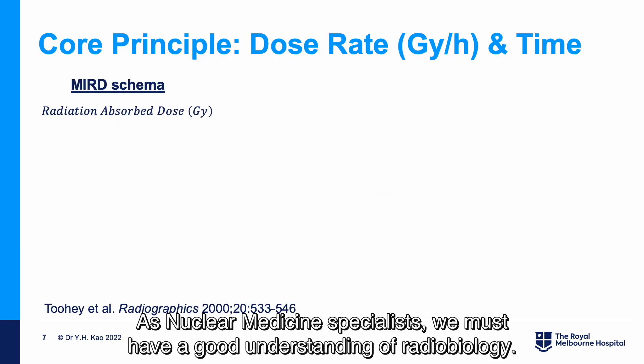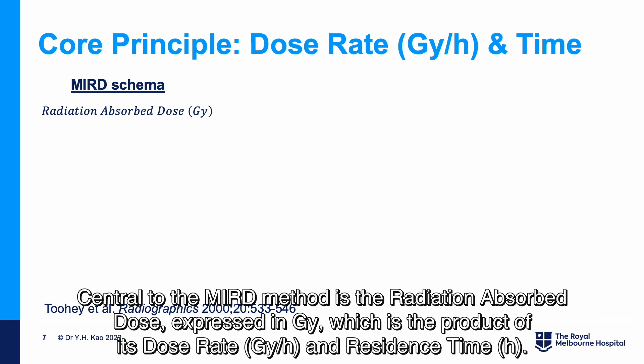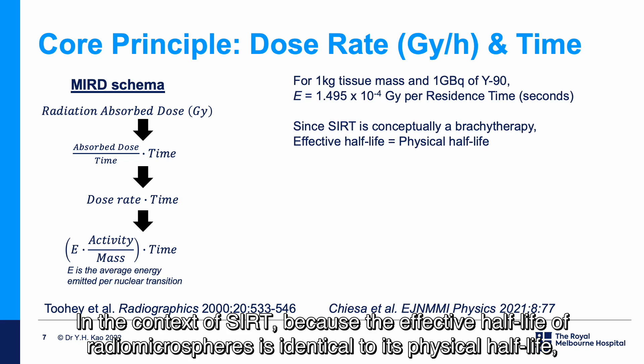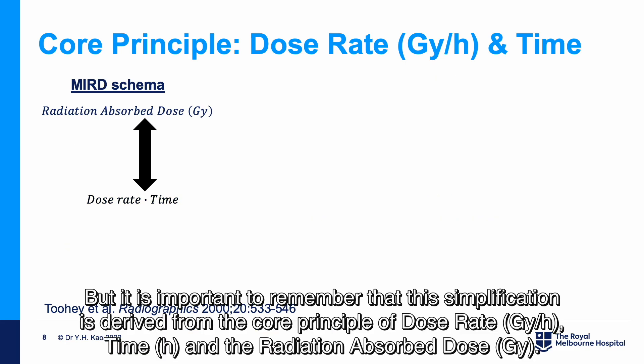As nuclear medicine specialists, we must have a good understanding of radiobiology. The MIRD schema provides us with an excellent framework to plan our treatments in a scientifically sound manner. Central to the MIRD method is the radiation-absorbed dose expressed in grey, which is the product of its dose rate and residence time. In the context of SIRT, because the effective half-life of radiomicrospheres is identical to its physical half-life, the entire dosimetry is simplified into a single, constant absorbed-dose-coefficient of 50 grey for 1 GBq of Yttrium-90 uniformly dispersed throughout 1 kg of tissue. It is important to remember that this simplification is derived from the core principles of dose rate, time, and the radiation-absorbed dose.